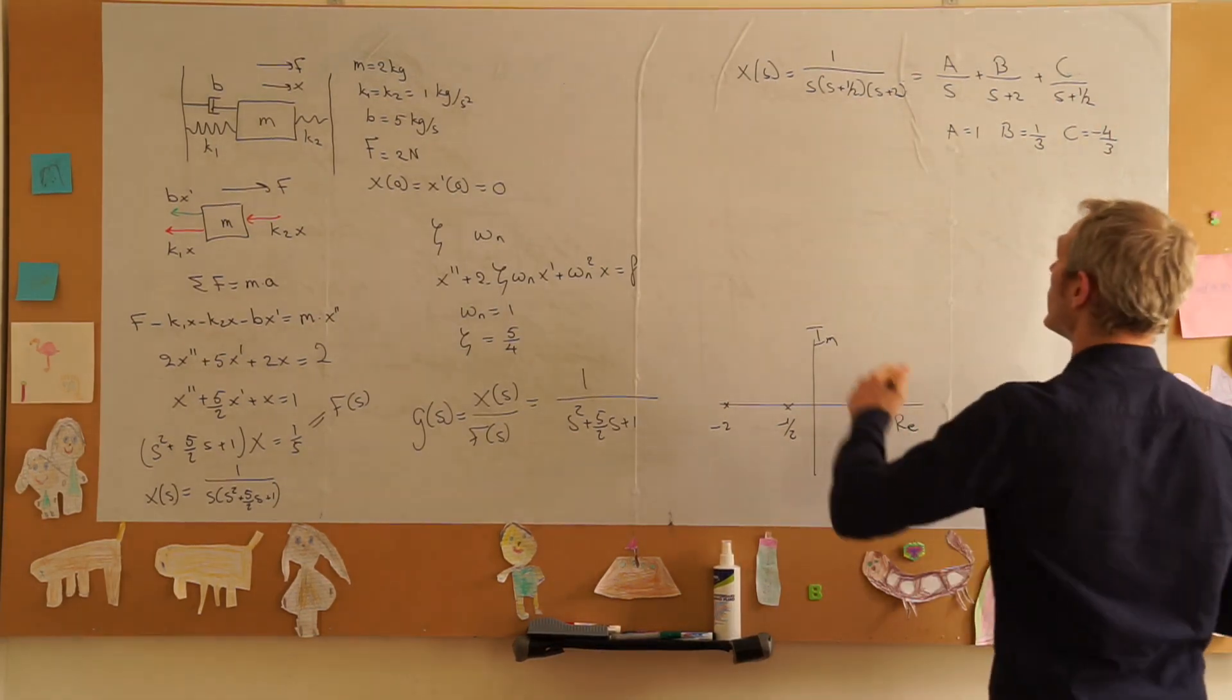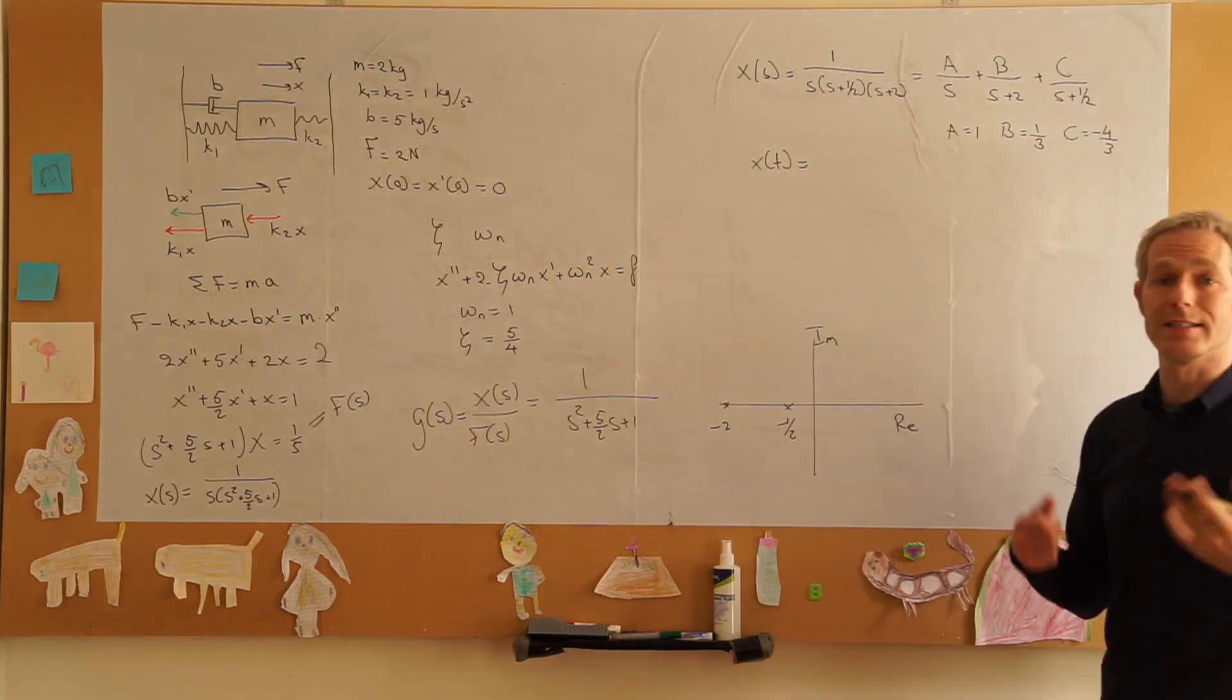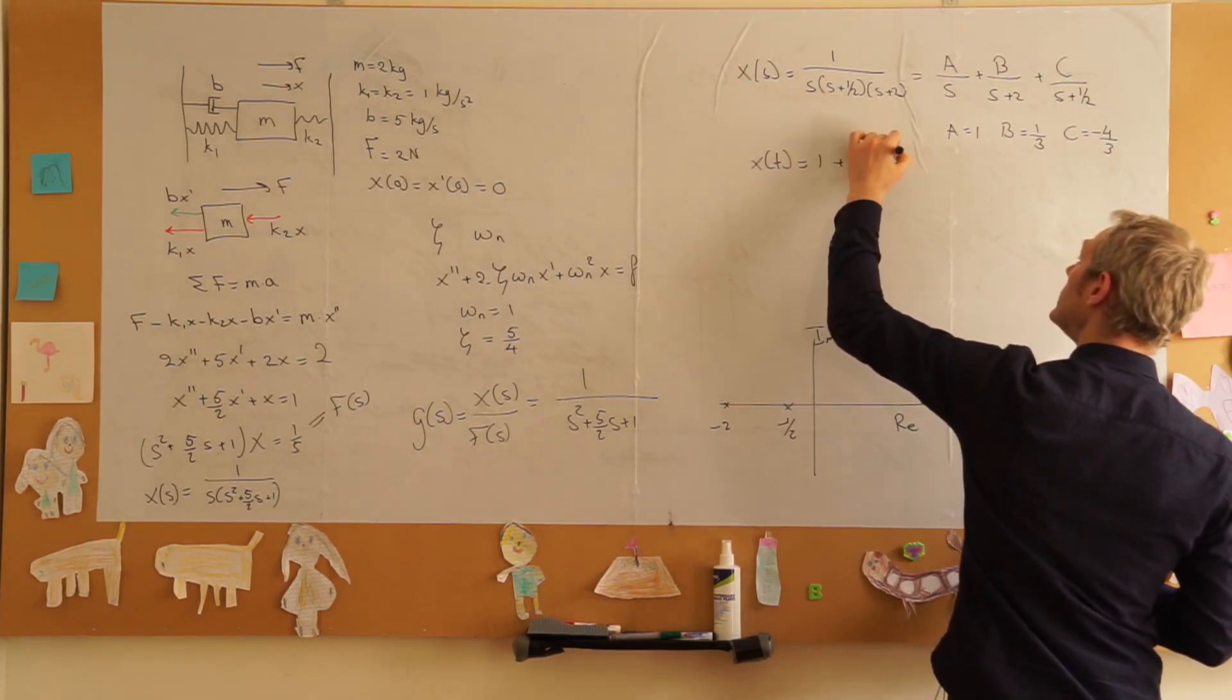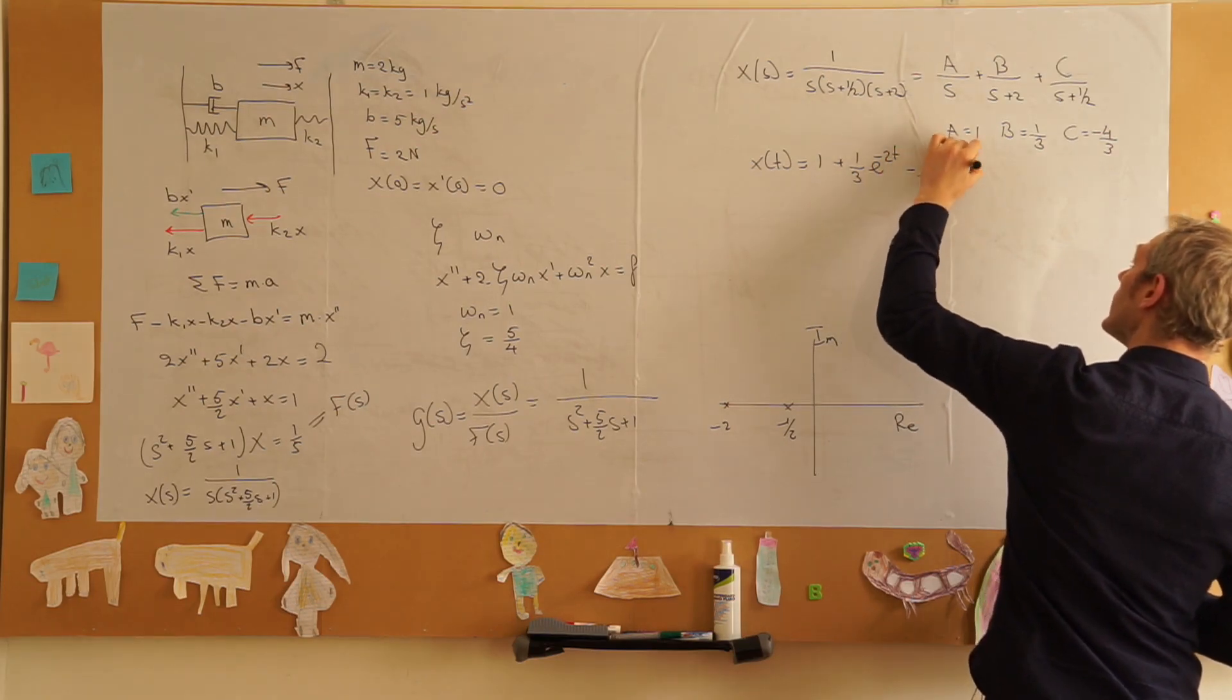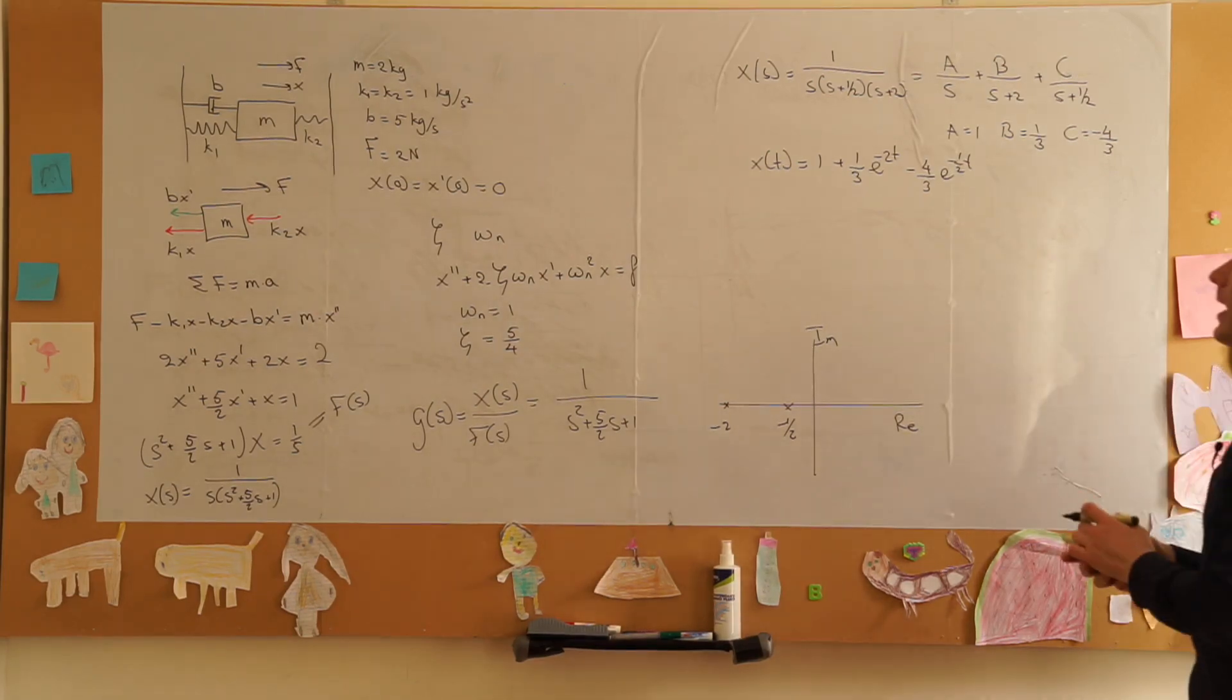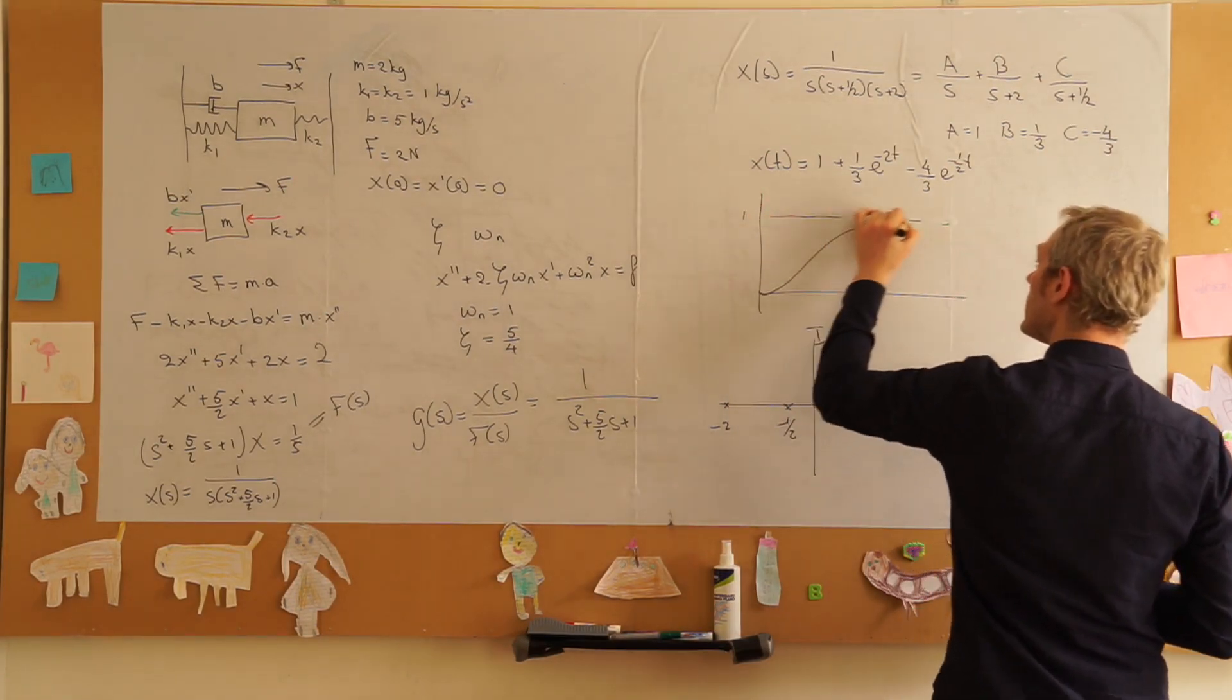If we take the inverse Laplace transform we get x of t is equal to, well the inverse Laplace transform of one over s is equal to one plus one over three e to the power of minus two t minus four over three e to the power of minus one half t. We see that indeed it's an overdamped system, there are no oscillations.